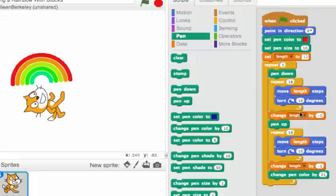In between each half circle it changes the length by one and at the end it changes the pen color by 21.